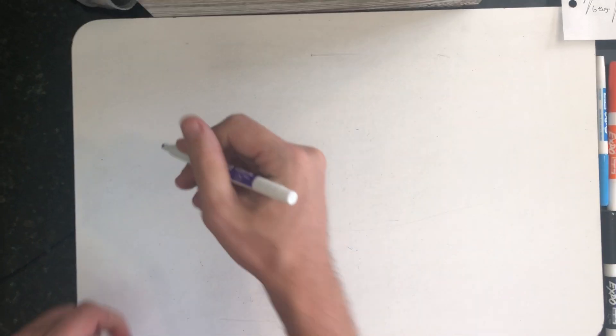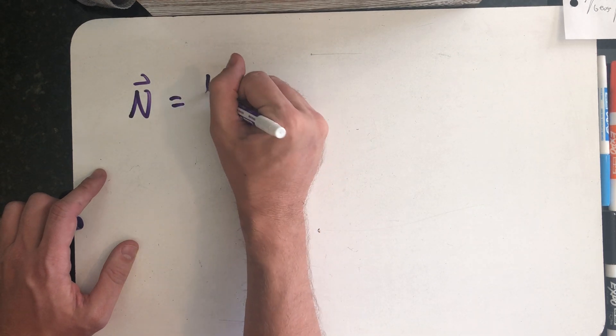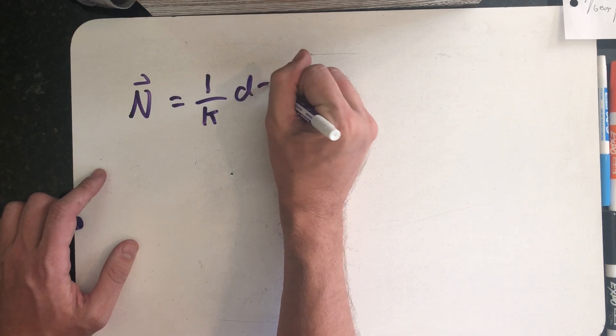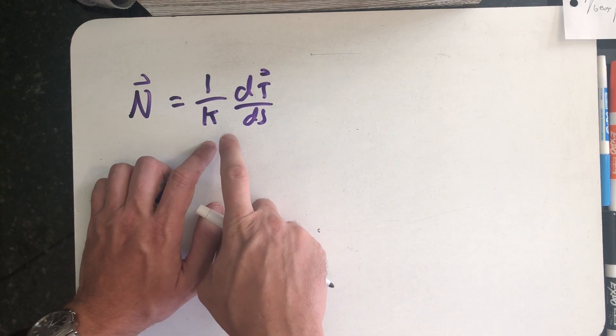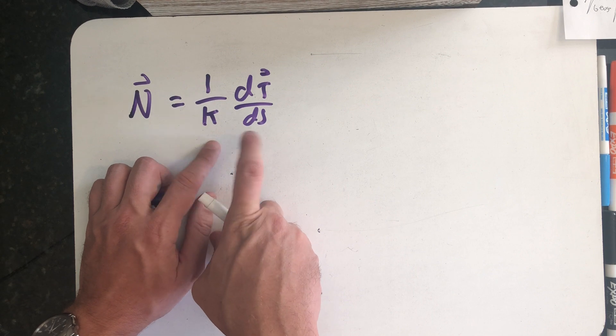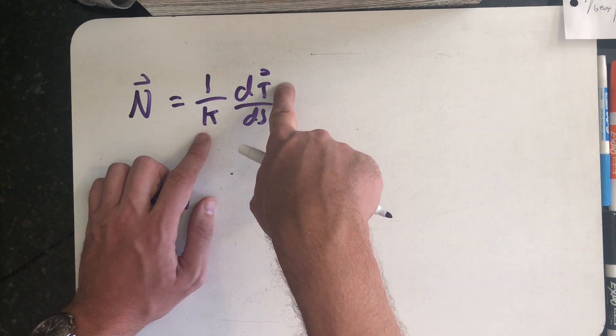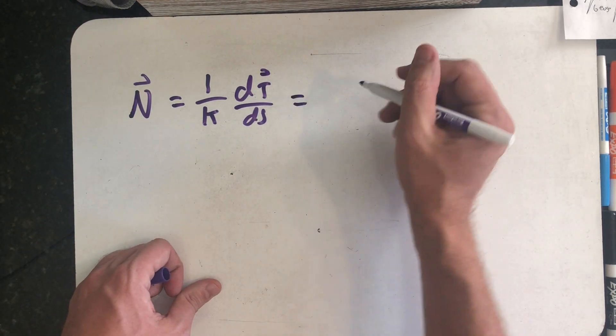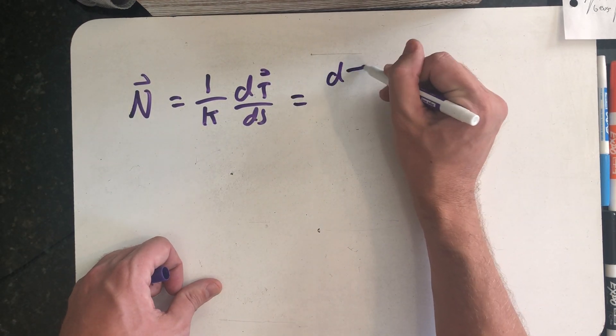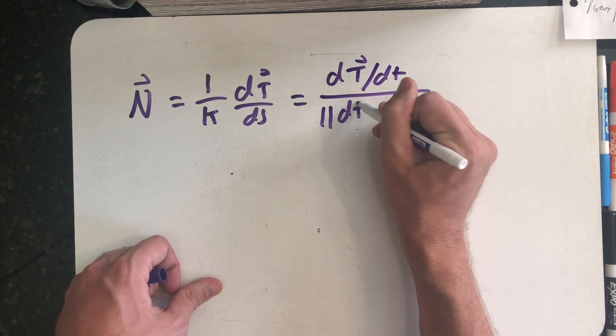There's another way to define big N. And your author does this: it's one over curvature dT/ds. Well, curvature is the magnitude of this vector. This is just a vector multiplied by its own size. T is still a unit vector, so its derivative is orthogonal to itself. This is just another way of writing down this same idea. And you can actually use the chain rule to prove this equality.